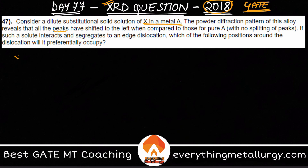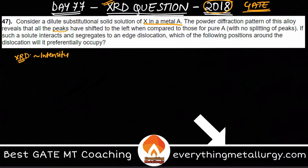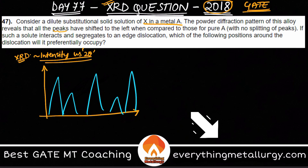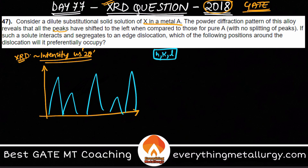In XRD you get intensity versus two-theta plots. Two-theta is two times the Bragg angle. On such a plot, you see peaks corresponding to different planes and their hkl values. Each crystal structure shows different peaks and different diffractions because of certain extinction conditions.